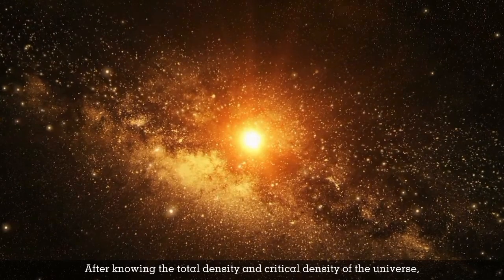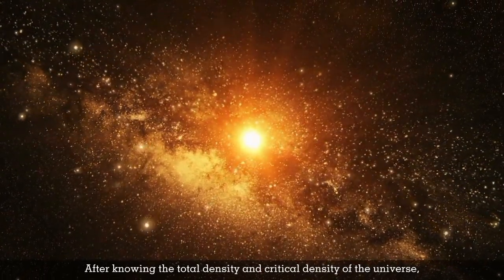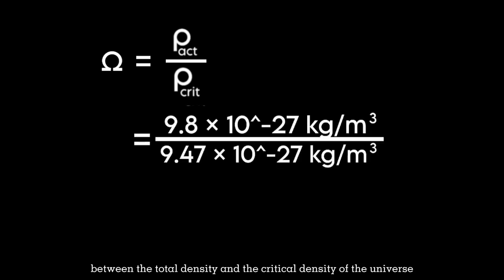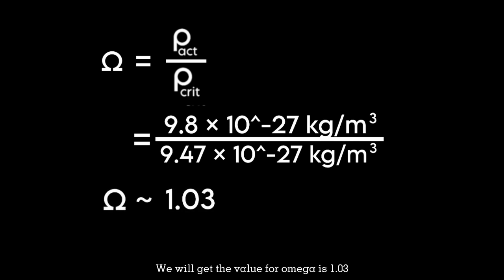After knowing the total density and critical density of the universe, we can calculate the omega or the ratio between the total density and the critical density of the universe. We will get the value for omega is 1.03.